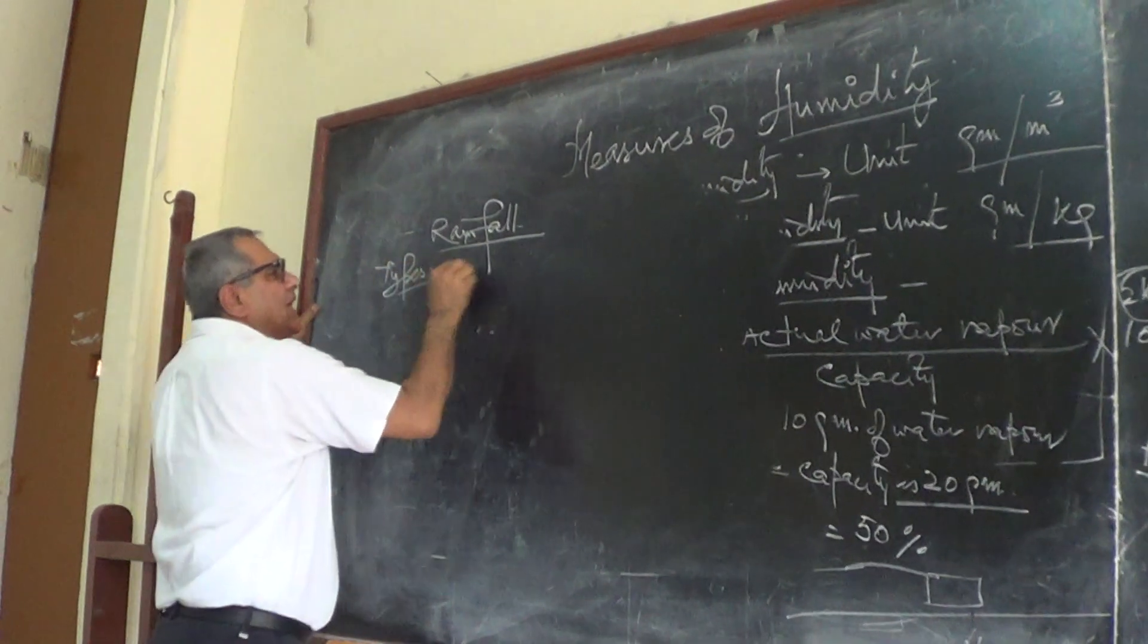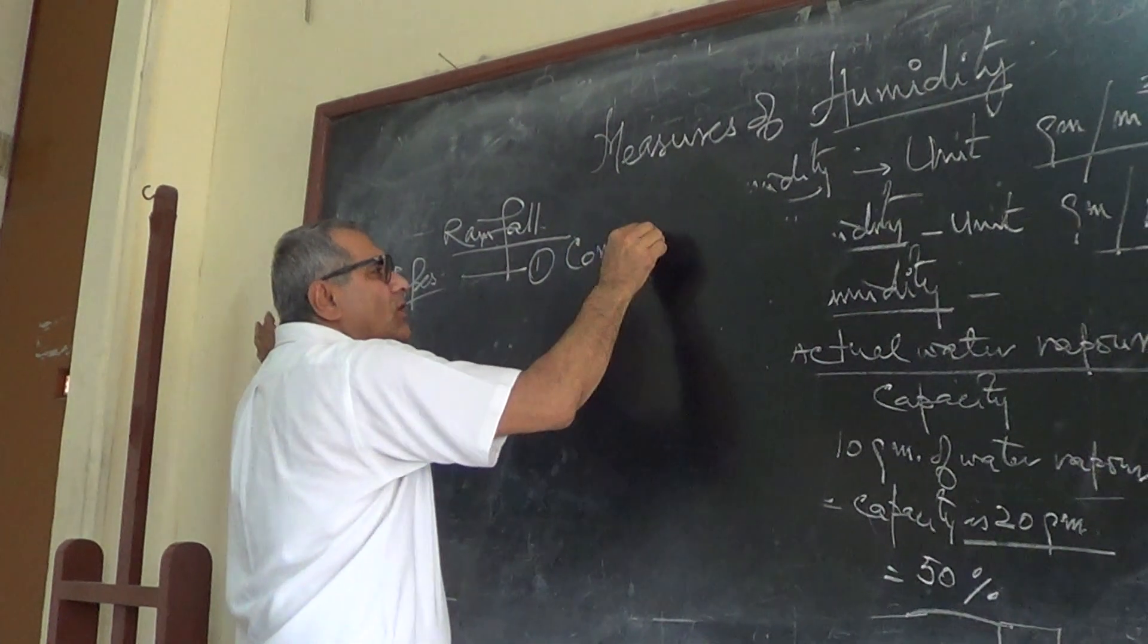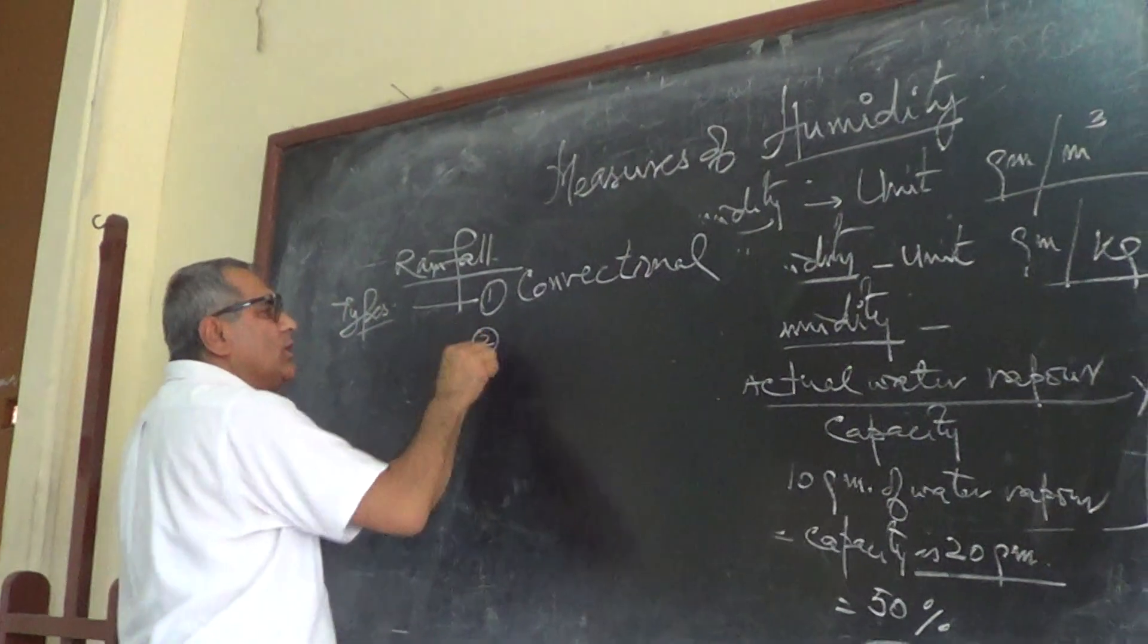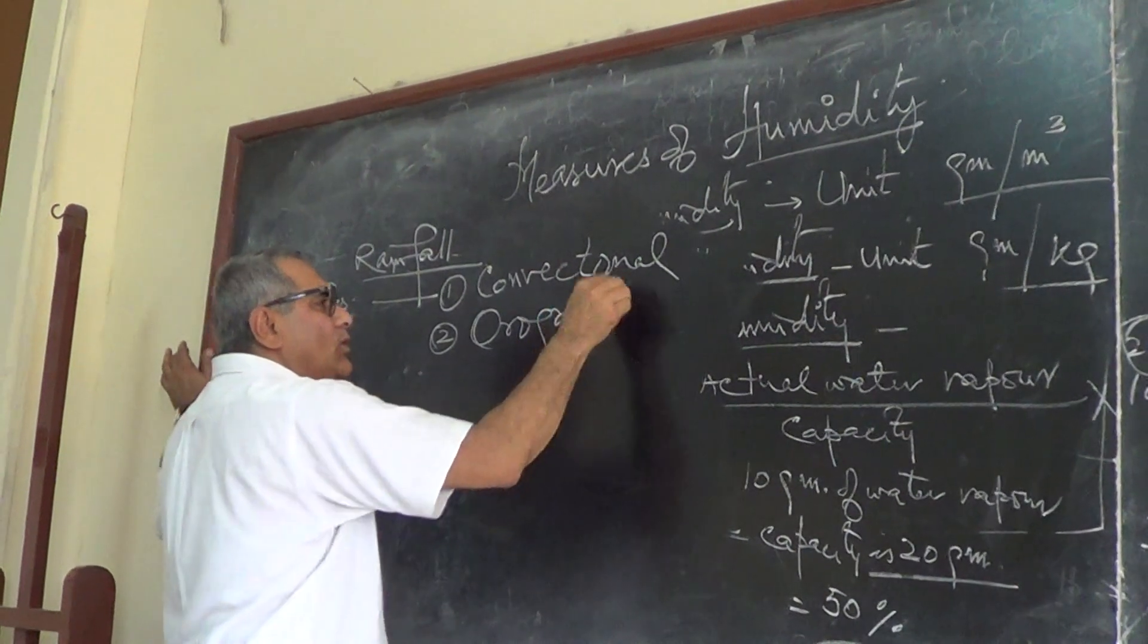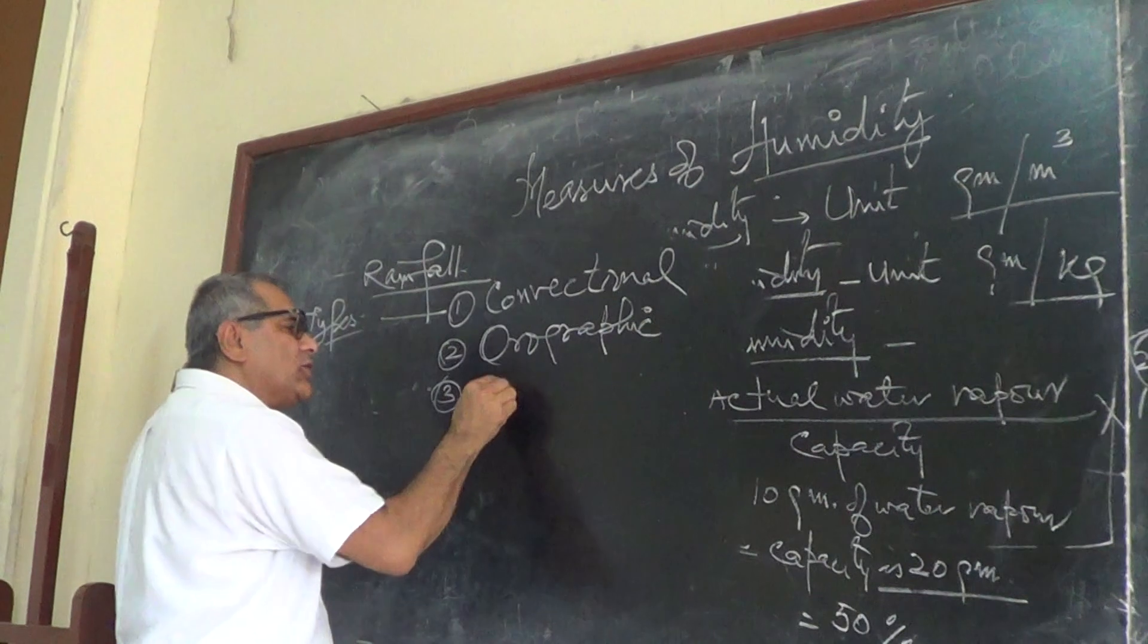One of the types is called convectional rainfall. Second type of rainfall is orographic rainfall. And third type of rainfall is cyclonic rainfall.